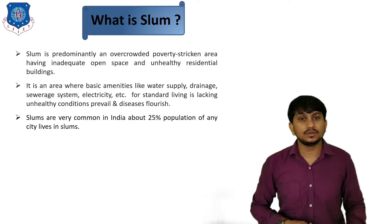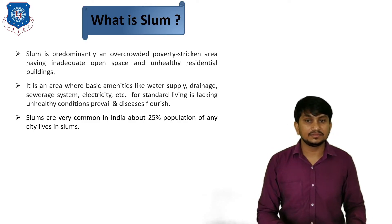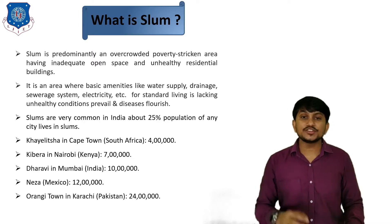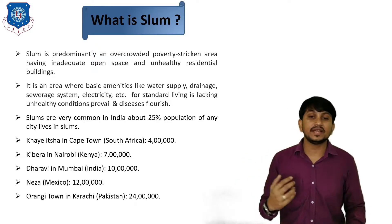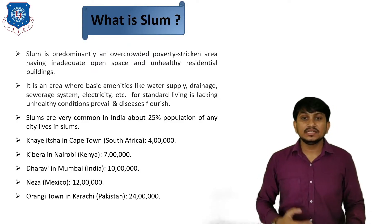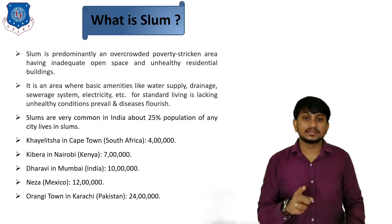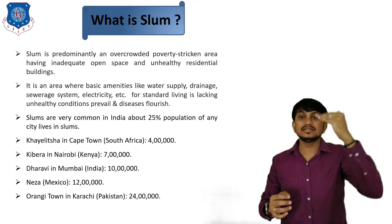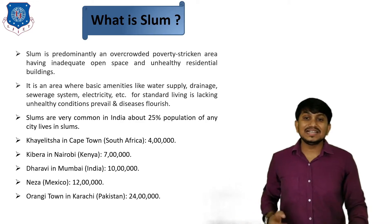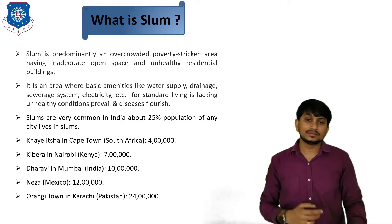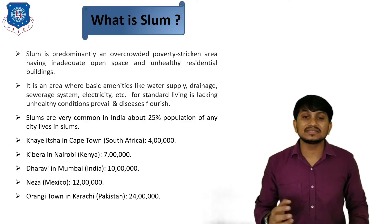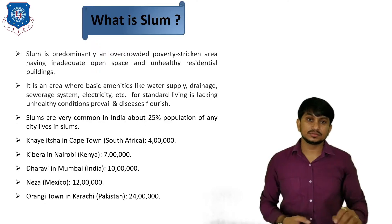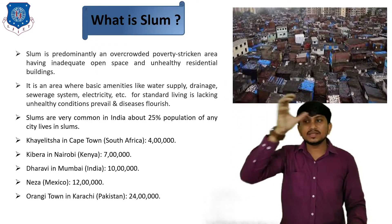The slums are very common in India; about 25% of the population of any city lives in slums in India. The largest slum in the world is Khayelitsha in Cape Town, South Africa, having a population of 4 lakhs. Second is Kibera in Nairobi, having a population of 7 lakhs. Dharavi in Mumbai, India, has a population of 10 lakhs but covers a comparatively smaller area. Fourth is Neza, Mexico, having a population of 12 lakhs. And the last is Orangi Town in Karachi, Pakistan, having a population of 24 lakhs.